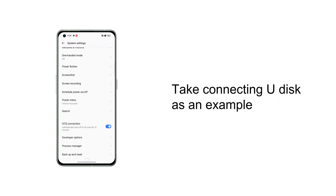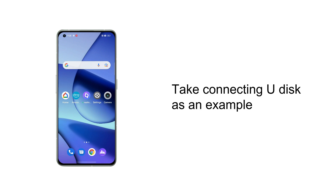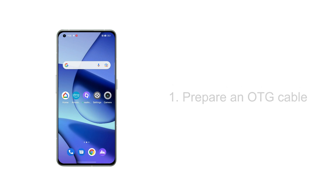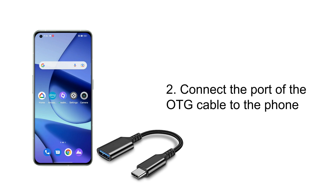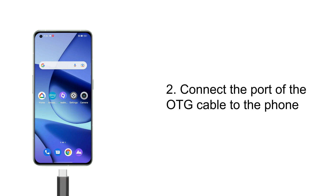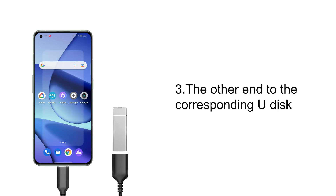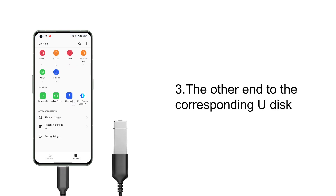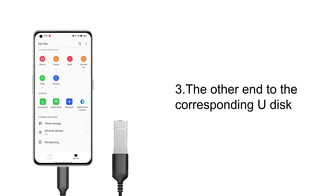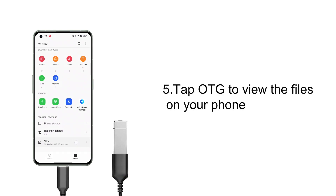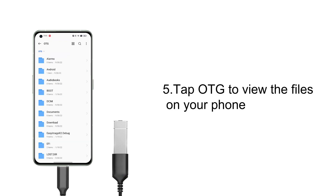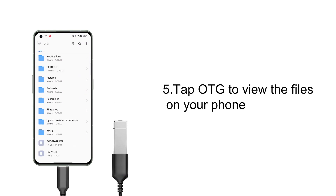Take connecting a u-disk as an example. First, you need to prepare an OTG cable. Then connect one port of the OTG cable to the phone, and the other end to the corresponding u-disk. OTG connected successfully. Now you can tap OTG to view the files on your phone.